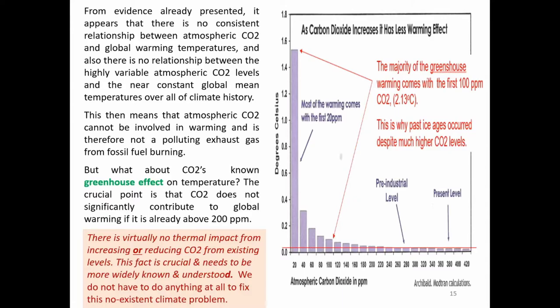But what about CO2's known greenhouse effect on temperature? The crucial point is that CO2 does not significantly contribute to global warming if it is already above about 200 parts per million. The bar chart shows the temperature effect of increasing increments of 20 ppm CO2 added to the atmosphere. The first 20 ppm creates a temperature increase of about 1.5 degrees centigrade. The next 20 ppm adds just 0.3 degrees centigrade, and as you add successive increments of 20 ppm, the temperature effect further decreases down to about 0.02 degrees centigrade per 20 ppm additional CO2.